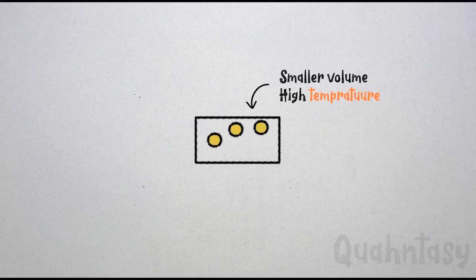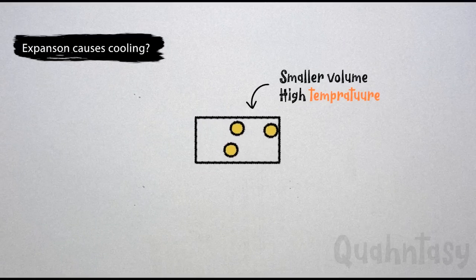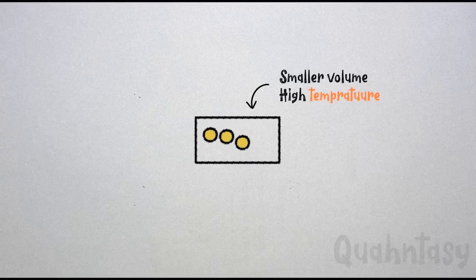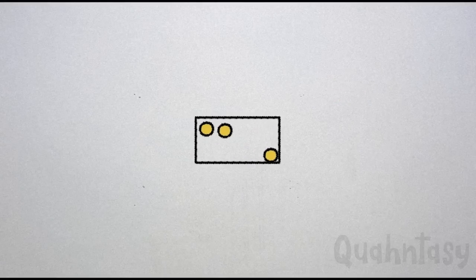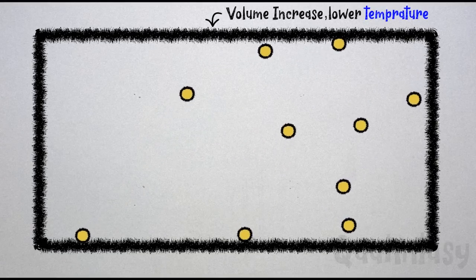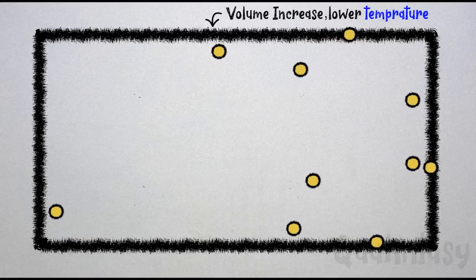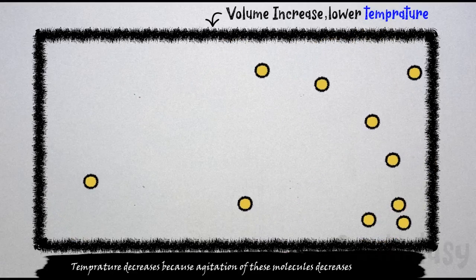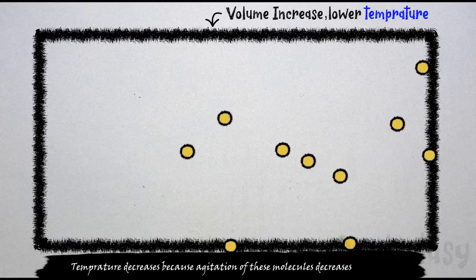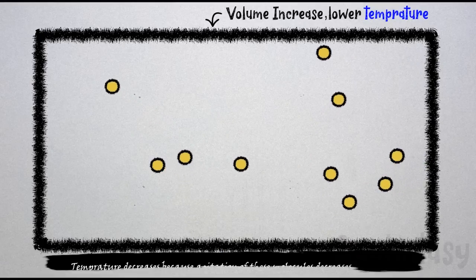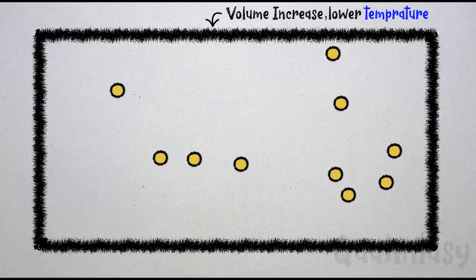We know that expansion causes cooling, right? Think of it this way: the thermal properties of a substance largely come from random motions of particles in it. So if you increase the volume, these particles have to travel a longer distance before bouncing back. So overall temperature decreases because the agitation of these molecules decreases and they have more space to run to.